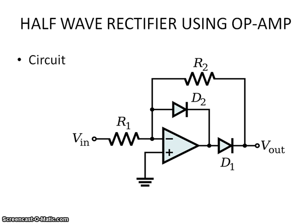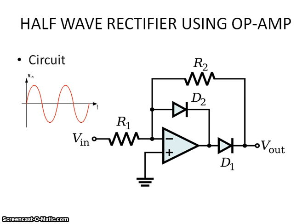In this circuit we can observe D1 and D2, which are two diodes. D2 is placed in the feedback path and D1 is placed across the output terminal. I am going to apply a sine wave signal. The peak-to-peak voltage is less than 0.6 volts — for example, 100 millivolts to minus 100 millivolts. This is the input signal. In the input we have a positive cycle and a negative cycle.